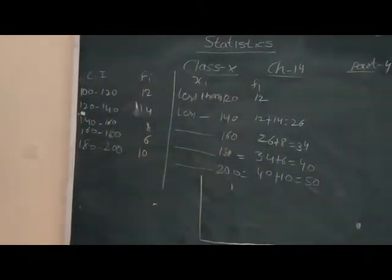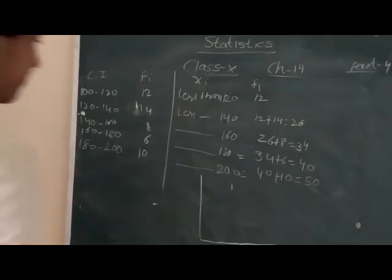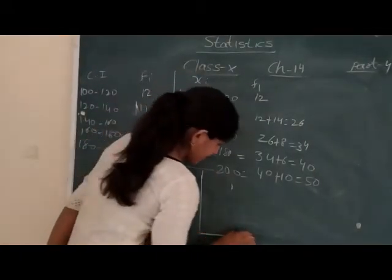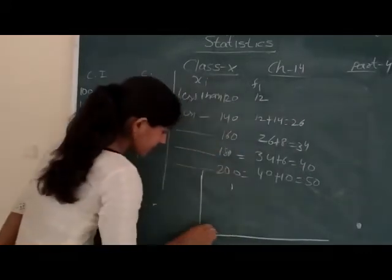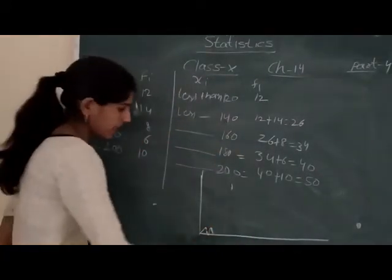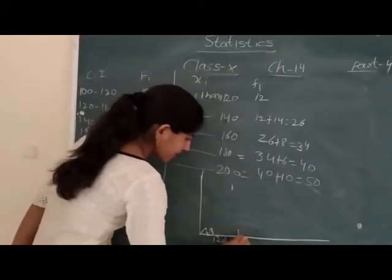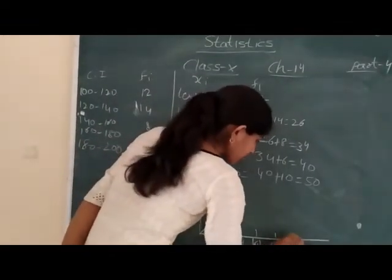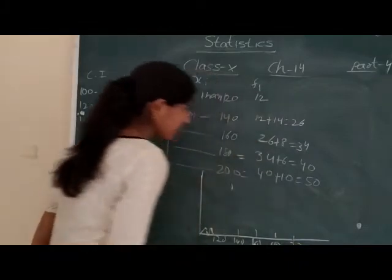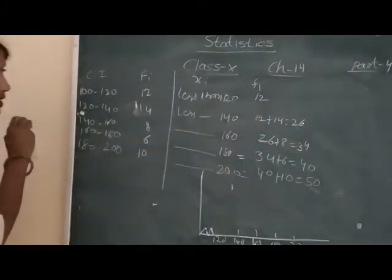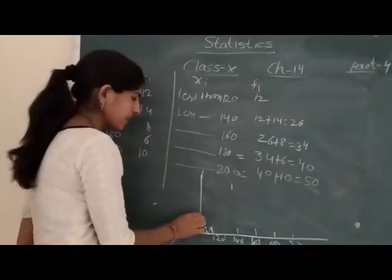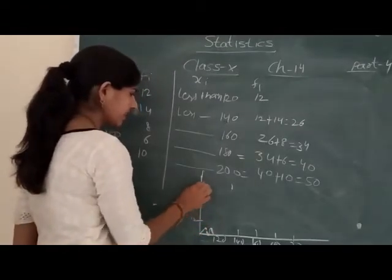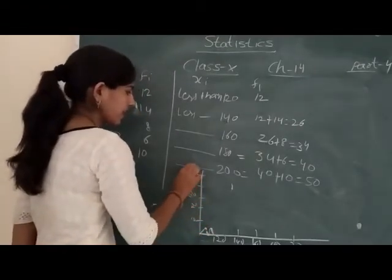When we make the curve, at the bottom we will take - we'll skip a bit. 120, 140, 160, 180, 200. Here I have to go up to 50. Take 10 intervals. 10, 20, 30, 40, and 50.